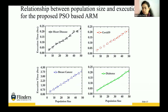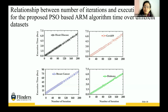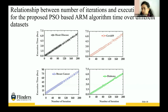This figure shows the relationship between variation of population size and execution time for the proposed algorithm. Time is calculated in seconds, and it does not vary much with changing population size, which is a very promising result. Another figure shows the relationship between number of iterations and execution time, with population size set to 10. Results show that even with a large number of iterations, it does not require much time.